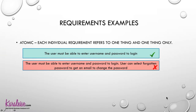Now here are examples of good and bad requirements. First, each requirement must be atomic — meaning each individual requirement refers to one and only one thing. It must be specific, pointed, focused, and unambiguous. For example: 'The user must be able to enter username and password to login' — that's one clear, atomic requirement.